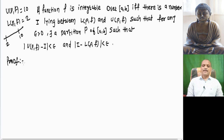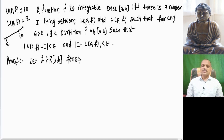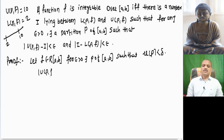Now for the proof, first consider that f is Riemann integrable over [a, b]. We know that if a function is Riemann integrable, then by the condition of integrability, for epsilon greater than 0 there exists a partition p of [a, b] such that whenever the norm of p is less than delta, upper sum minus lower sum is less than epsilon. This is the condition of integrability.